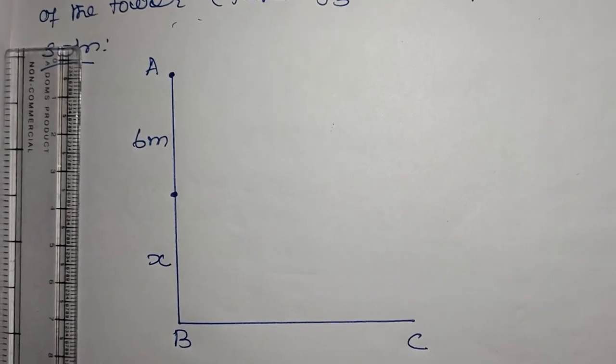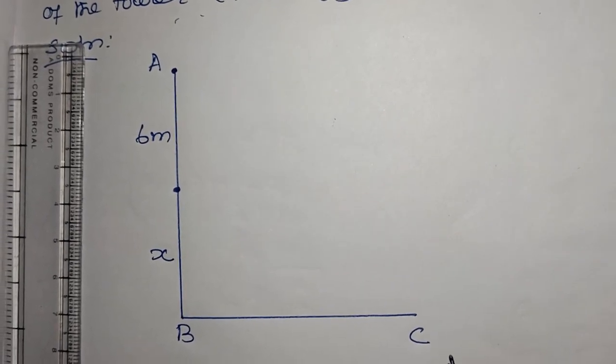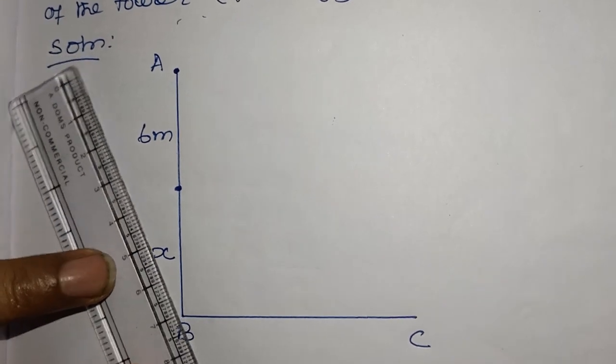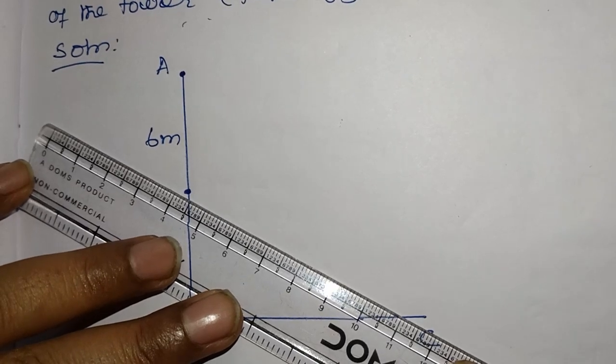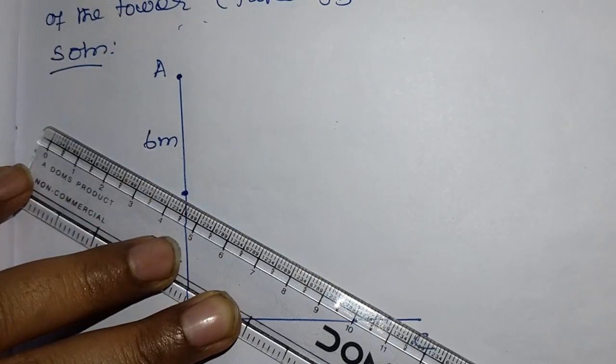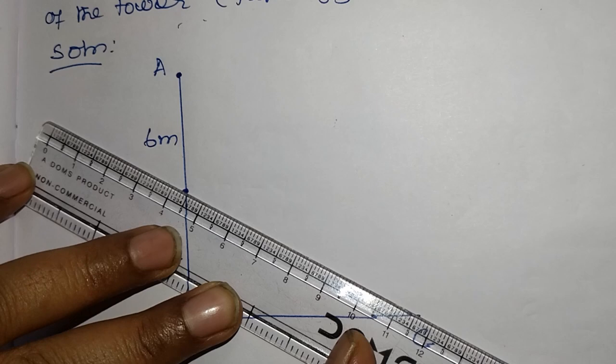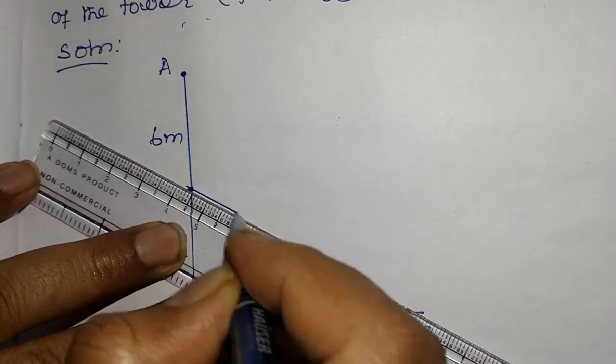Then at a point on the plane, the angle of elevation at the bottom is 30 degrees. At a point on the plane, the angle of elevation at the bottom and the top of the flagstaff are 30 degrees and 45 degrees. So this is 30 degrees.